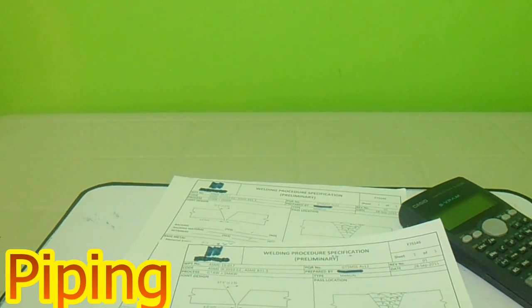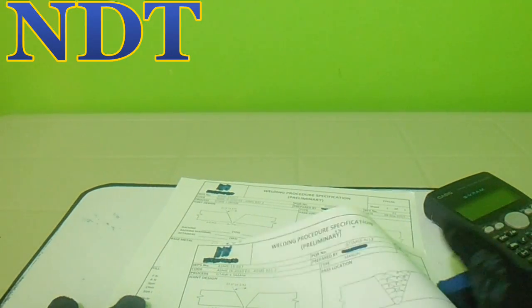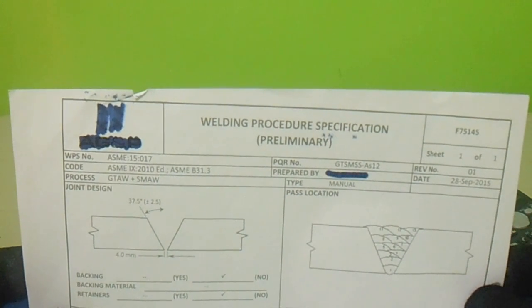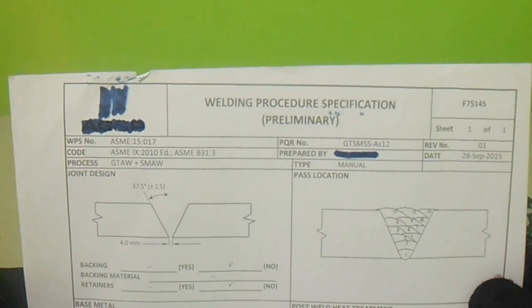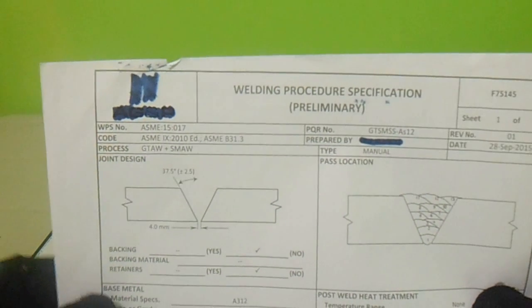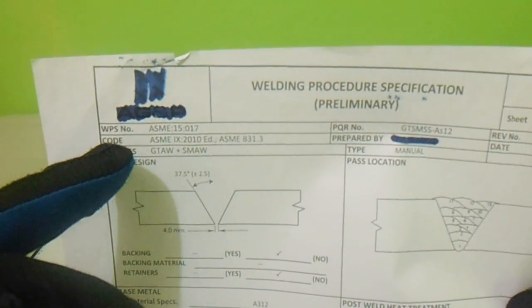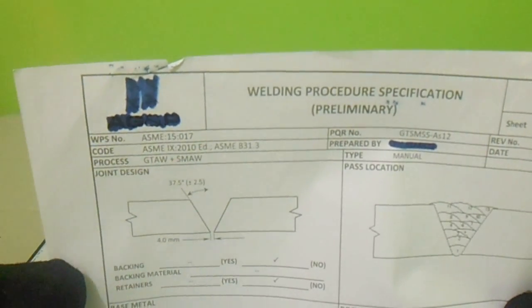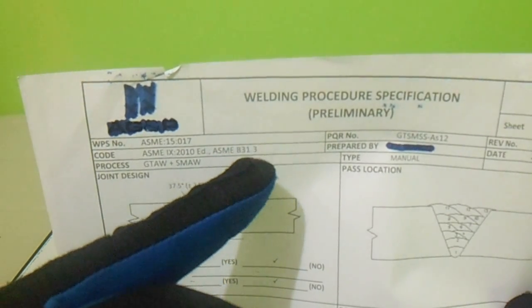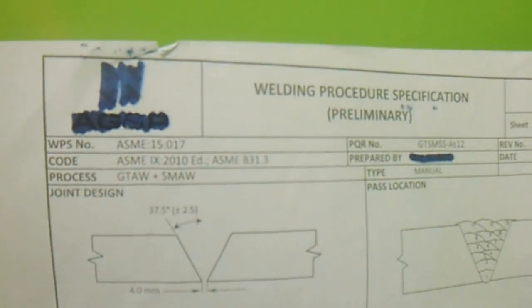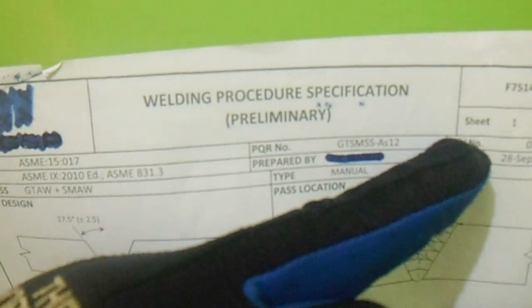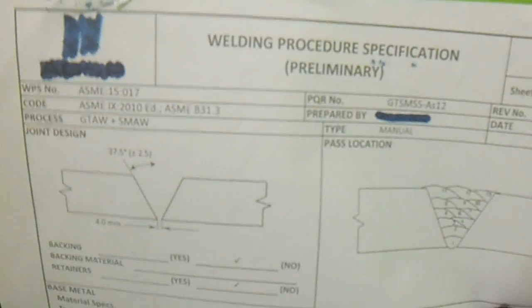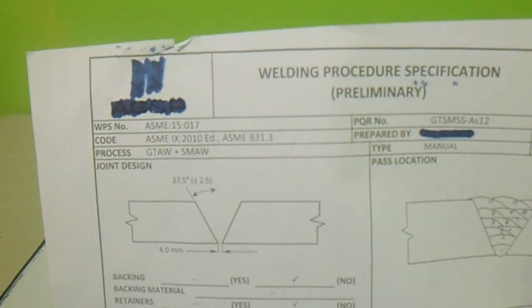Hello guys, welcome to Piping Welding and NDT channel. I have a WPS here — a Welding Procedure Specification. From this WPS number we have a code: ASME 9 and ASME B31.3, which is process piping. We also have a process, a PQR number, revision, date, and type.